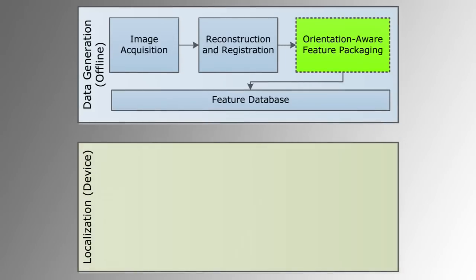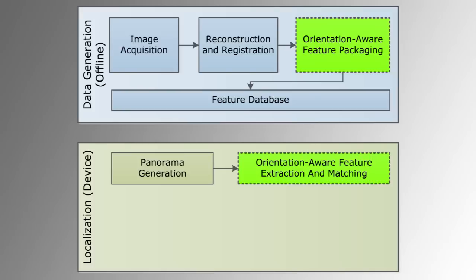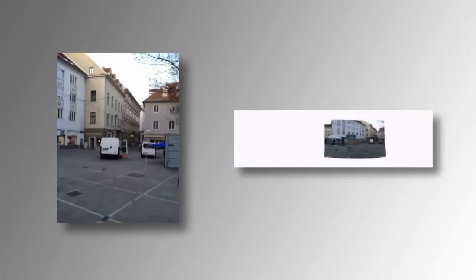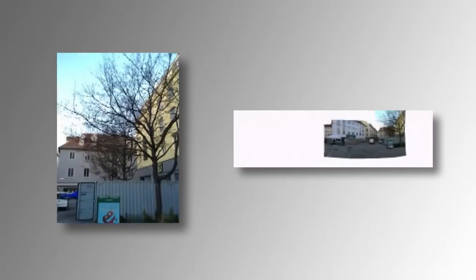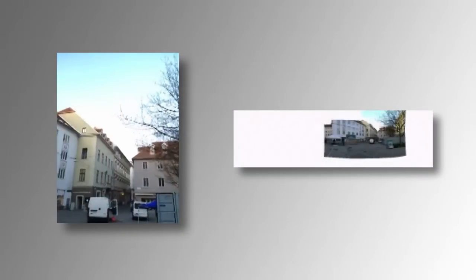The second part of our approach is the online localization, running on the device in real-time. Providing a reasonably accurate GPS estimate, the bag of features of the actual environment block are fetched from the feature database. We generate a panorama on the fly from the live video, considering the sensors of the device to align it to north and gravity.